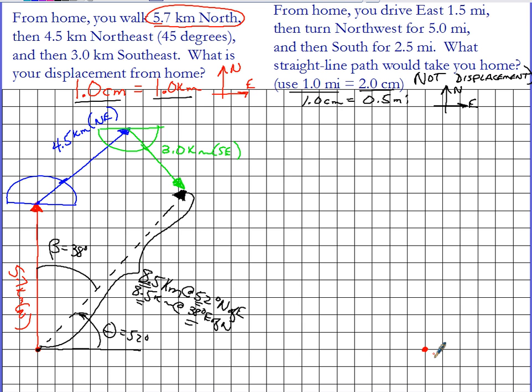First thing we're going to do is draw a 1.5 mile vector east. That would end up being 3 centimeters long in order to use my scale. 1.5 miles would require 3 centimeters here to be able to draw that vector. So this would be 1.5 miles east.